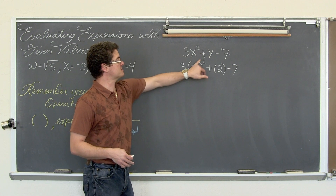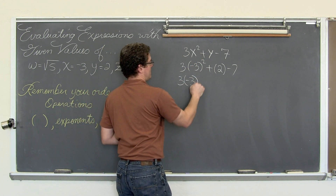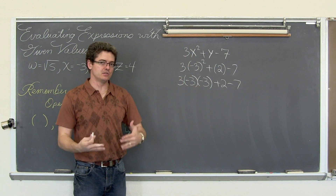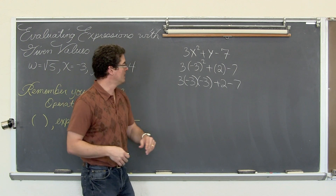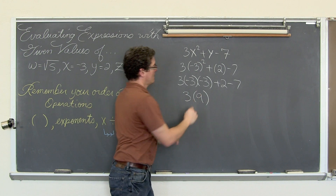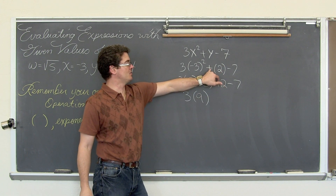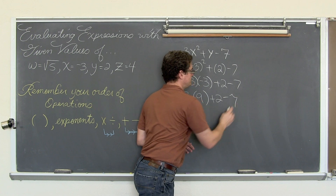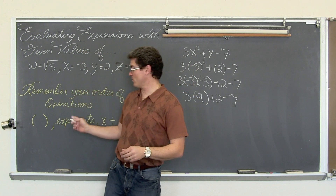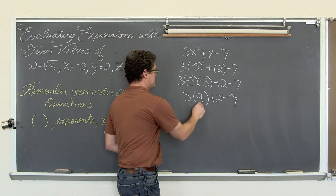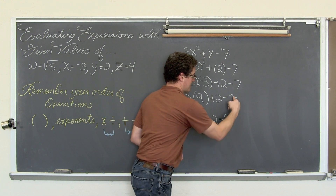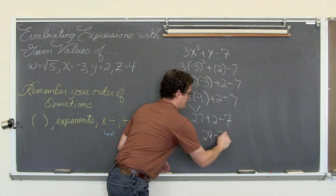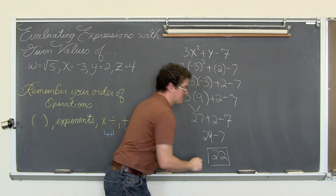Parentheses — there is nothing to do inside. Then we go to exponents. Negative three squared is negative three times negative three, which gives us nine. So we have three times nine, plus two, minus seven. Keeping up with the order of operations — multiplication next. Three times nine is twenty-seven, plus two minus seven. Twenty-seven plus two is twenty-nine, minus seven, which ultimately comes out to be twenty-two.